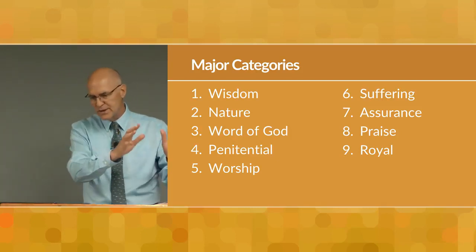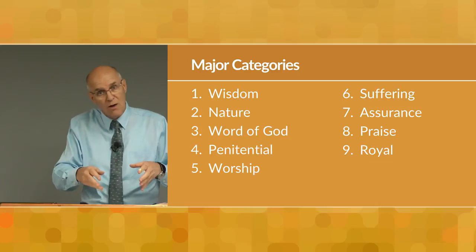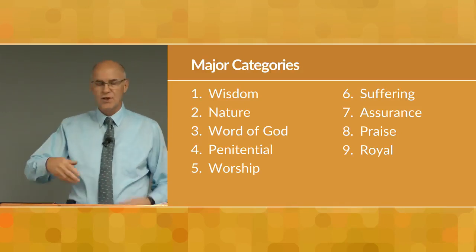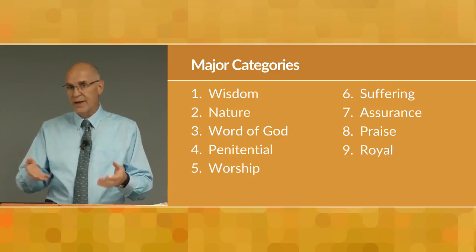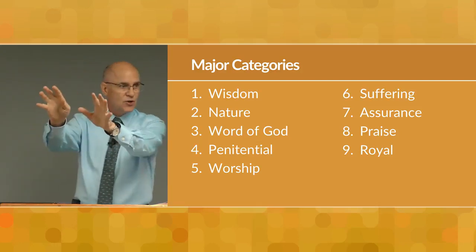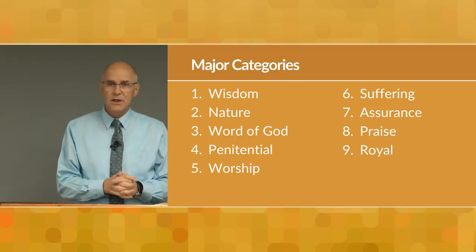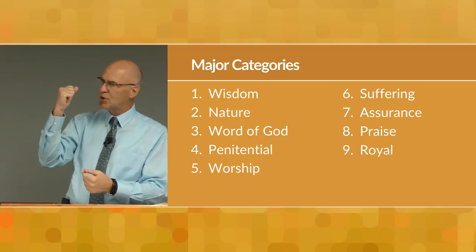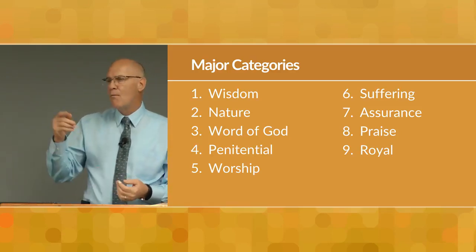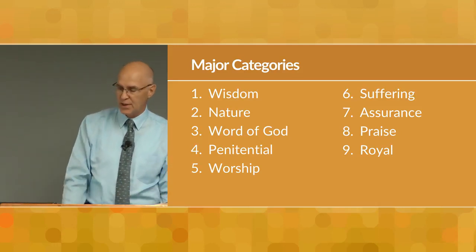There are wisdom psalms, nature psalms — they explain themselves. Word of God psalms declare the beauty, power, and sureness of the Word of God. Penitential psalms are where the individual is repenting. Worship psalms are usually about someone going to worship or excited about being in Jerusalem. Suffering psalms are self-explanatory. Psalms of assurance — 'God is my rock,' 'The Lord is my shepherd.' Psalms of praise and royal psalms. Royal psalms were specifically written for a royal wedding or a coronation, a special psalm to celebrate that particular event.